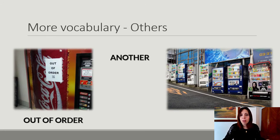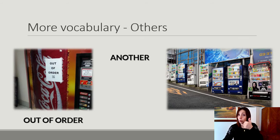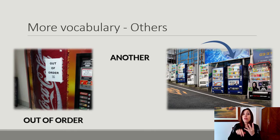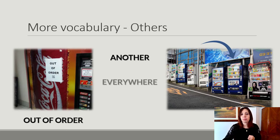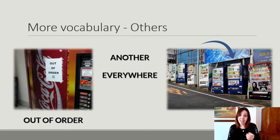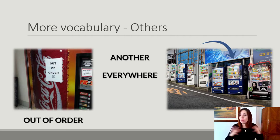What can you see there? Another vending machine, and another vending machine — otro. One more, another vending machine. If you want to say otros — other vending machines — that's the plural. Another. Other. You find vending machines everywhere — everywhere in Japan. I took this picture from the internet and found out that in Japan you have vending machines everywhere you go.